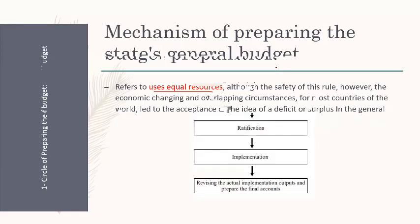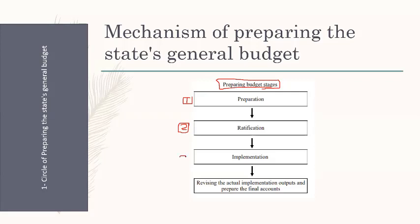Up to that point, we have covered five main principles. Now we are going to move to the stages of preparing the budget. Let's look at the mechanisms of preparing the state general budget. There are four stages to be followed in order to prepare the budget.